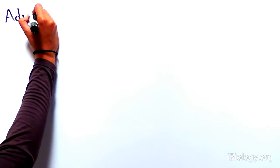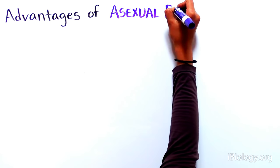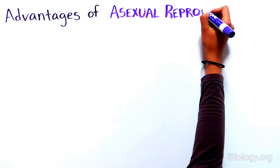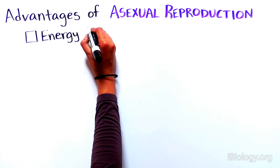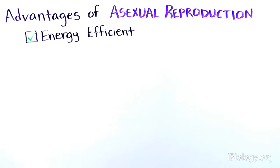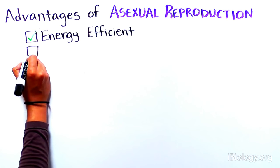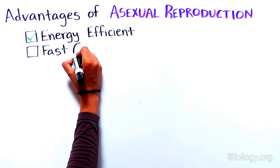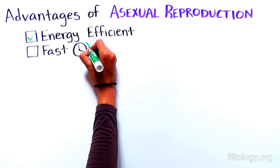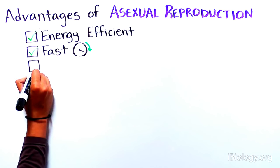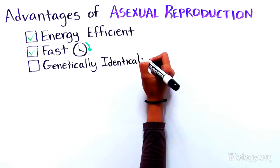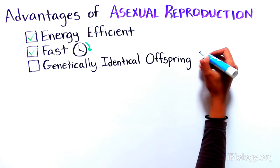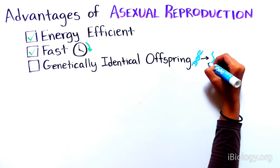While asexual reproduction does not produce genetically distinct offspring, it has important advantages that allow for species survival. One, it is energy efficient and does not require attracting a mate. Two, it is usually fast — some bacteria can reproduce in as little as 20 minutes. And three, it produces offspring that are genetically identical, an advantage in stable environmental conditions.